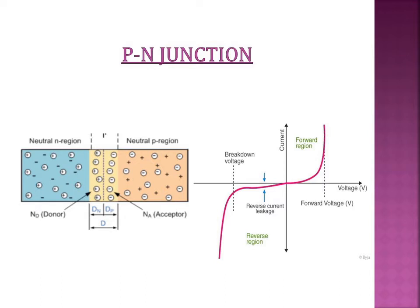For the flow of current in the device, this barrier potential, which results in a barrier height, has to be overcome. This means that for easy flow of current, all the carriers are required to move in the device. For that, the breakdown of this depletion region is necessary. Once the depletion region is not there, current will flow easily because of unobstructed movement of charge carriers.